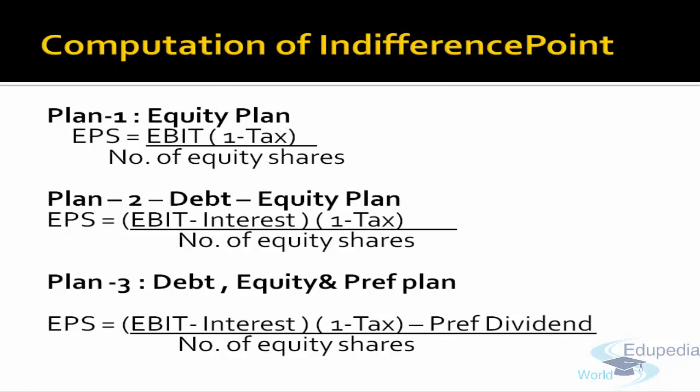So if there is an indifference point, the EPS in any of the three plans would be same. If the company has two options — one is equity plan and one is debt-equity plan — at the indifference level, the EPS of both plans is same. So EBIT times (1 minus tax) divided by number of equity shares equals Plan B EPS. So if I have to compute the indifference point, I can equate both these equations as equal.